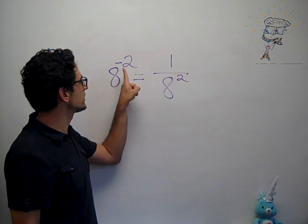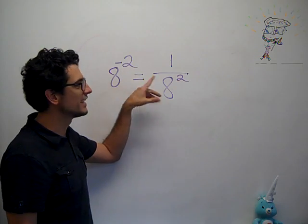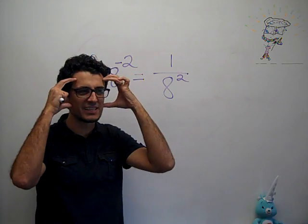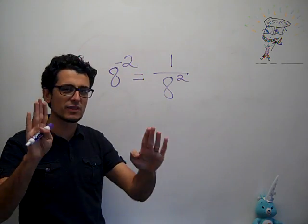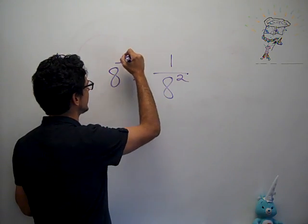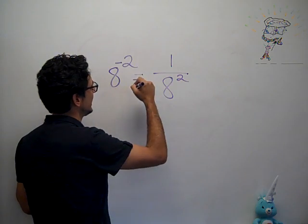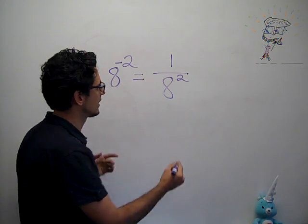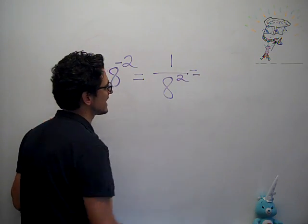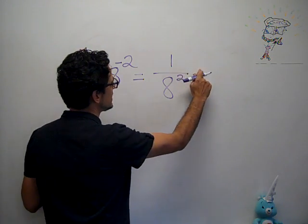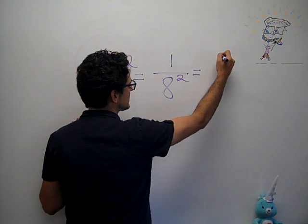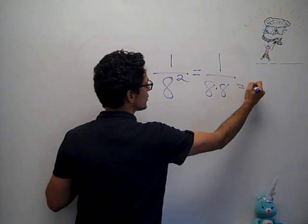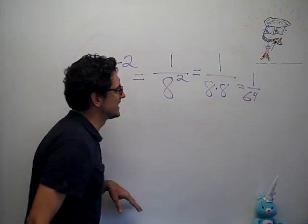Because when it's a negative exponent, it means that I have something less than 1. It means that I'm moving this. I like to think of it as everything moving downstairs. You don't have to think of it that way. So the idea is that I can finish off this problem as 1 over 8 to the second. And what is 8 to the second? Well, it's 1 over 8 times 8, which means 1 over 64. That is the idea.